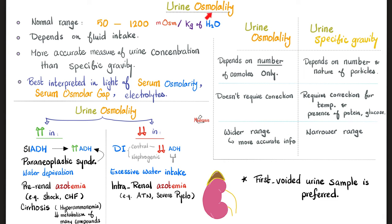To better understand and interpret urine osmolarity, you will need to measure other things like serum osmolarity, serum osmolar gap, and electrolytes in the serum and urine to help you diagnose your patient better.